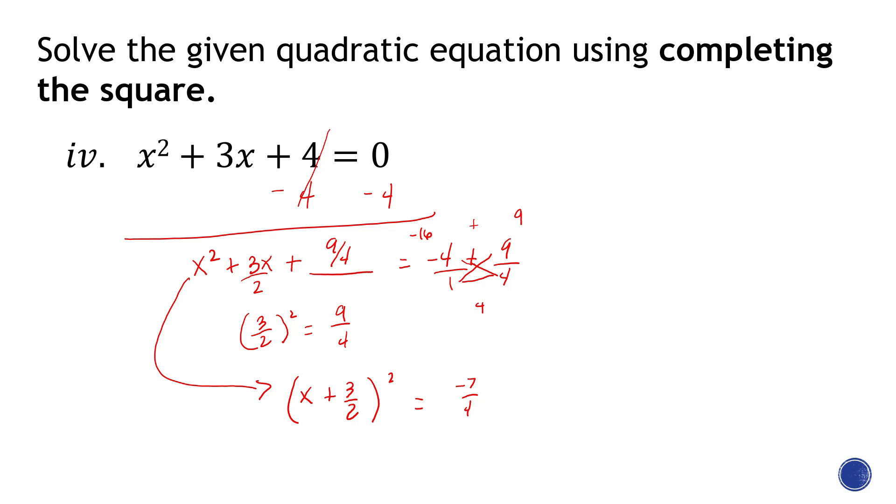And then, again, once you reach this point, everything is going to be easy. Find the square root of both sides. That will give us x + 3/2 equals √(-7/2). Now, like what I said, the roots of this quadratic equation are imaginary. So there you go. The square root of a negative number is imaginary.